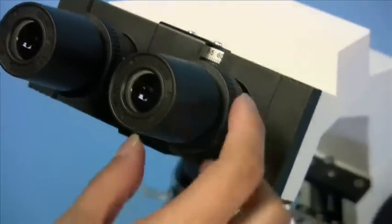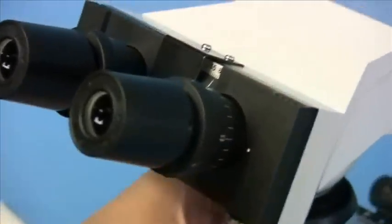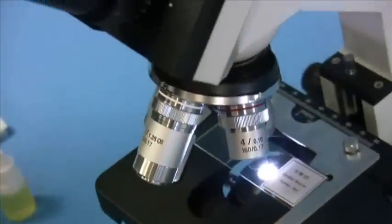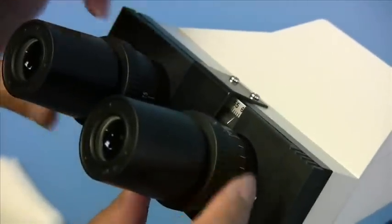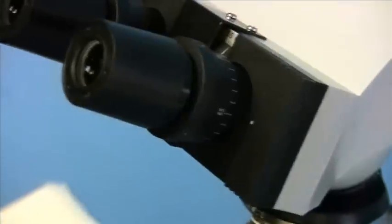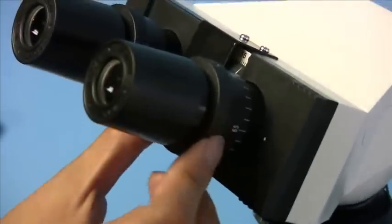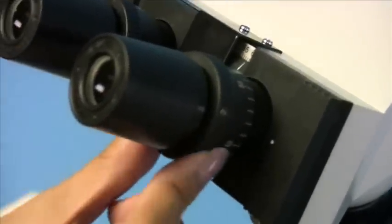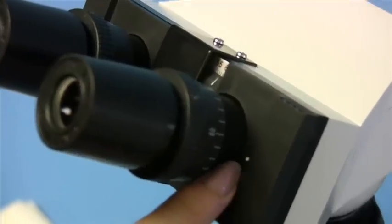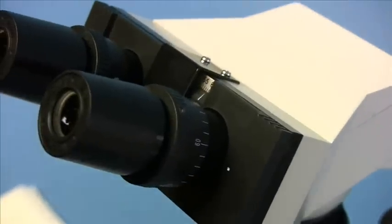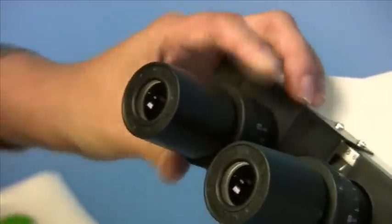Now you also want to adjust the ocular diopter. So first, place the 10x objective into position and note the interpupillary distance. Rotate the diopter ring to both diopter rings to that number. So in my case, I have 59 as my interpupillary distance, so I simply turn the diopter ring to that number so that the white dot points to 59. And I do the same on the left side.